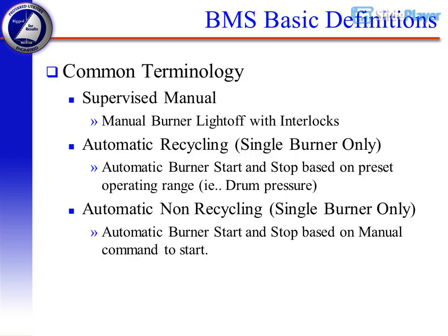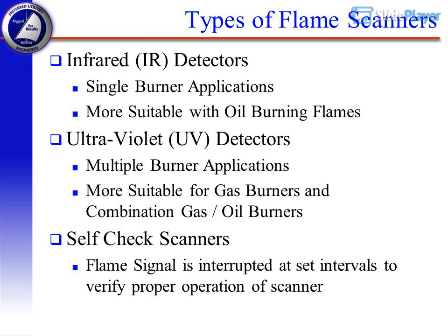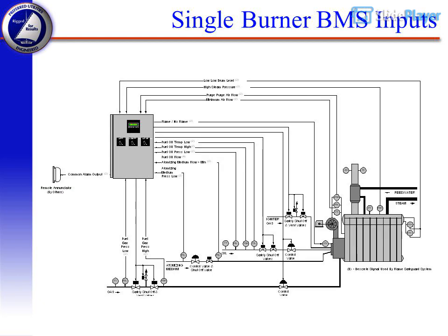BMS Basic Definitions — Common Terminology: Supervised Manual (manual burner light-off with interlocks); Automatic Recycling, single burner only (automatic burner start and stop based on preset operating range, e.g., drum pressure); Automatic Non-Recycling, single burner only (automatic burner start and stop based on manual command to start). Types of flame scanners: Infrared (IR) detectors for single burner applications, more suitable with oil burning flames; Ultraviolet (UV) detectors for multiple burner applications, more suitable for gas burners and combination gas/oil burners; Self-Check Scanners where the flame signal is interrupted at set intervals to verify proper operation.